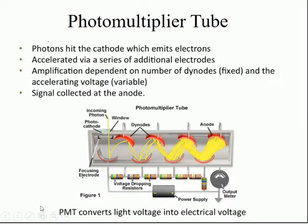The photons from the light enter the detector and are amplified by a series of electronics, allowing much more precise detection of your signal. This is why PMTs are mostly used in FACS sorters and microscopy — they amplify the signal — compared to CCD cameras or detectors, which do not amplify but simply capture the image.